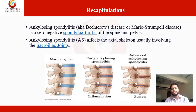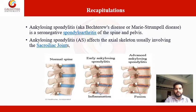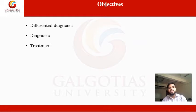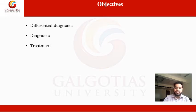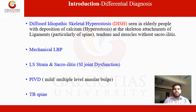Today we will discuss the differential diagnosis — how to diagnose ankylosing spondylitis and how to differentiate it from other similar diseases — and the treatment.